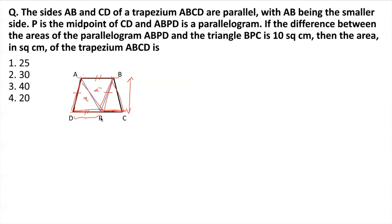That means DP is equal to PC. The bases are the same. Now, ADP and BCP are triangles having the same height and the same bases, so definitely they will have the same areas. So if ADP has area X, BPC also has area equal to X. Now, the parallelogram ABPD has area X plus X or 2X, and the area of triangle BPC is X.